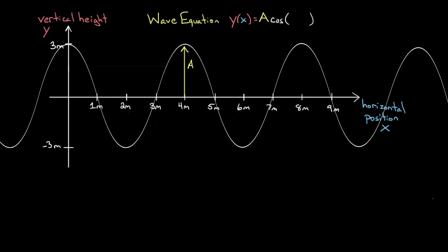I play the same game that we played for simple harmonic oscillators. I say this is two pi divided by — not the period this time, because this is a function of x, not time. It would actually be the distance it takes for this function to reset, which is what we call the wavelength. The distance between two peaks is called the wavelength, and we represent it with the Greek letter lambda. So the distance it takes a wave to reset in space is the wavelength, and that's what we divide by, because it has units of meters. Then we multiply by x.